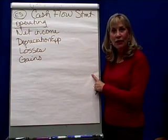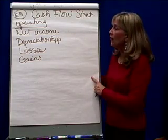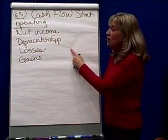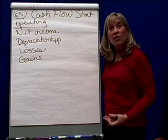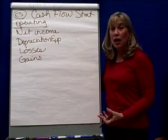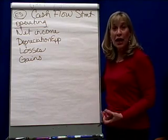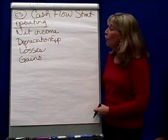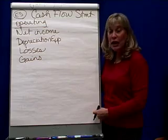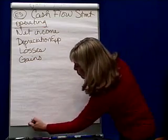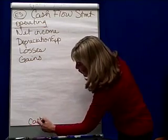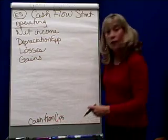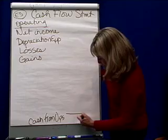When we talk about the operating section, the first thing that shows up is net income. Then we add back depreciation expense, since that's an income statement item that did not put cash into my pocket or take it out. My goal for the operating section is to figure out how much cash we've received from operations.